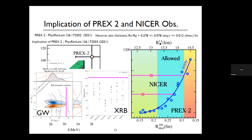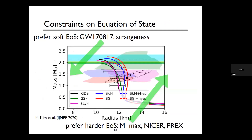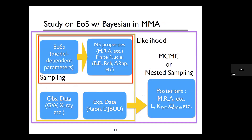I wanted to study why this difference exists and how we can describe and possibly unify these results. The gravitational wave result is consistent with a soft equation of state, while NICER and PREX are consistent with a harder equation of state. For this study, I'm trying to make a unified result using Bayesian inference on observational and experimental data.